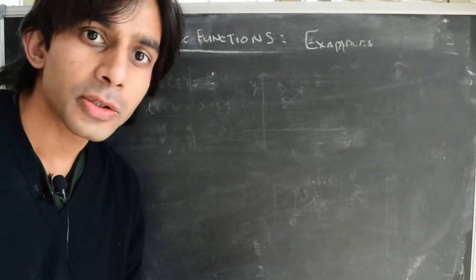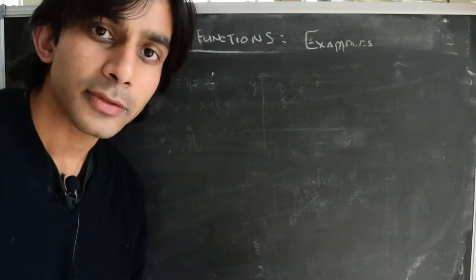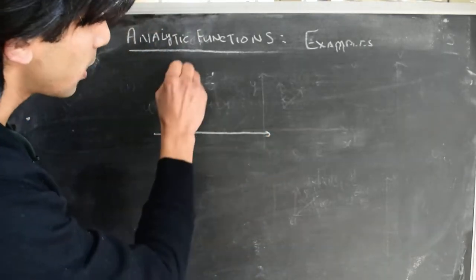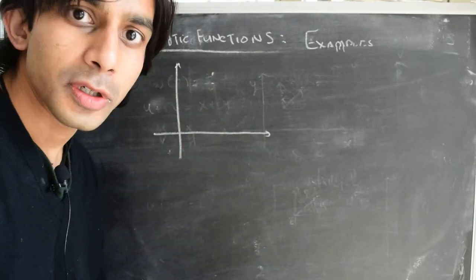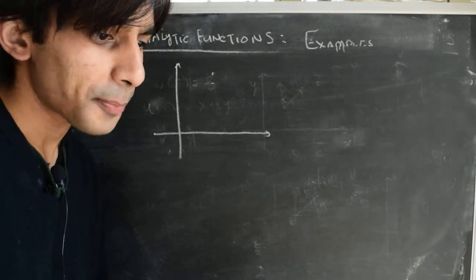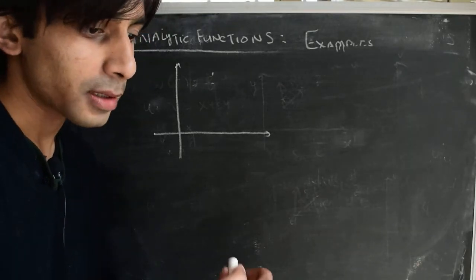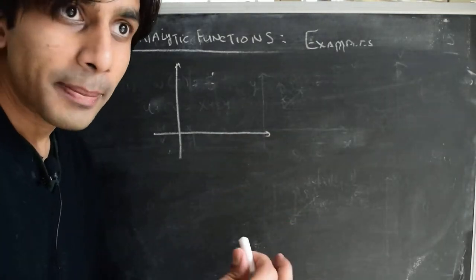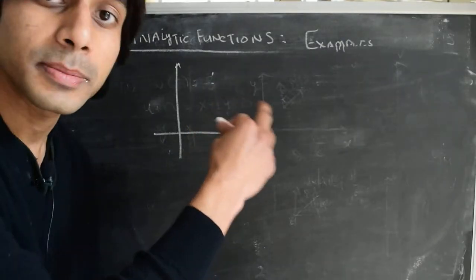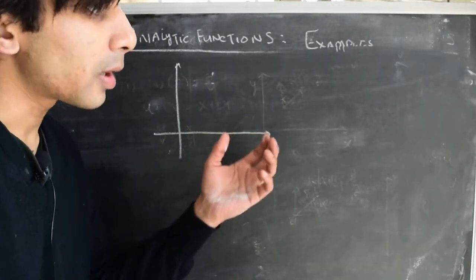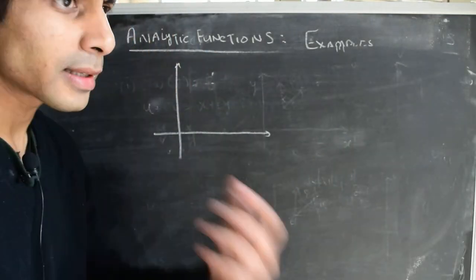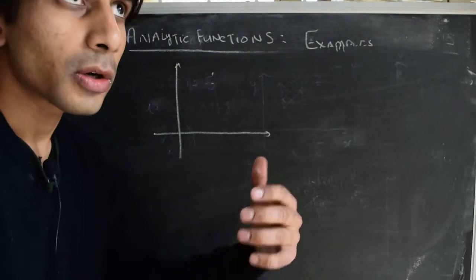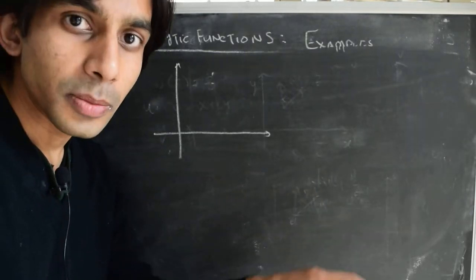Hi there. In the previous videos we started talking about analytical functions. In particular, we saw that to discuss the analytical properties and derivatives of complex functions, we're looking at a very local or microscopic region of the z-plane and seeing the effect of the mapping on infinitesimal figures or arrows on the z-plane and how they're mapped onto the w-plane. That's what we mean when we say that differential calculus looks at microscopic or local properties of functions.